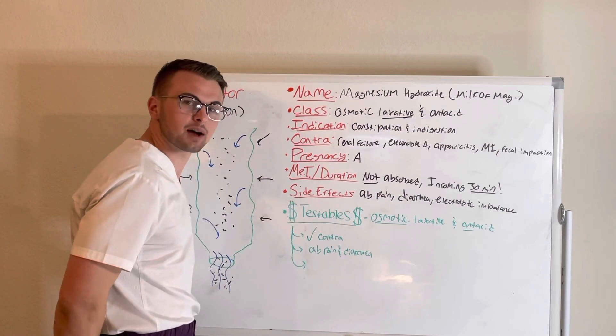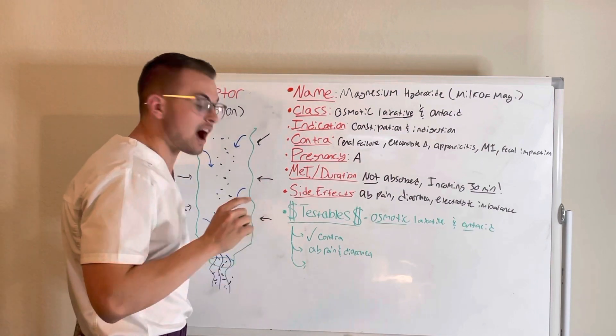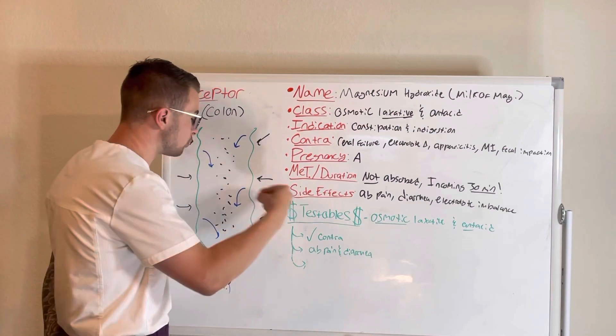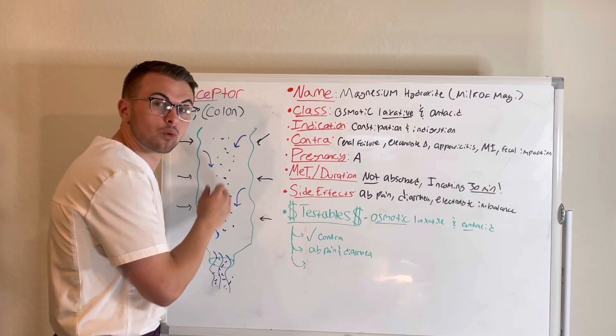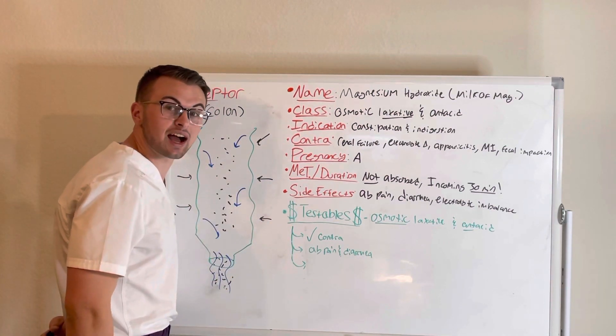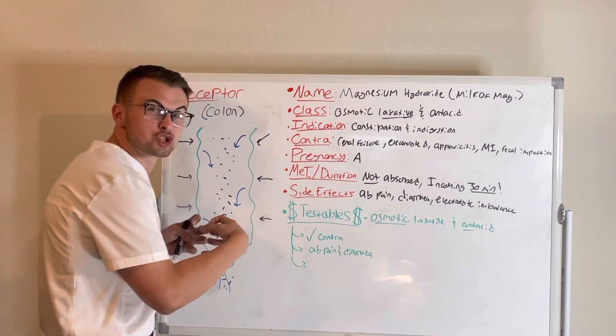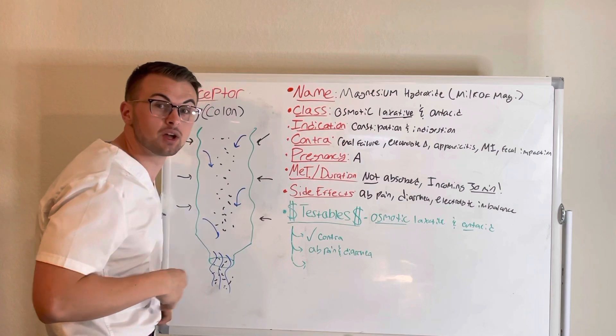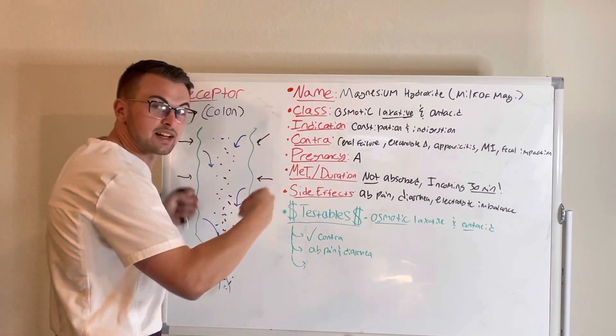Because magnesium hydroxide creates a hyperosmolar environment, water is pulled into the lumen or canal of the GI system. This will stretch the colon, which tells the enteric nervous system to make room by excreting stool.